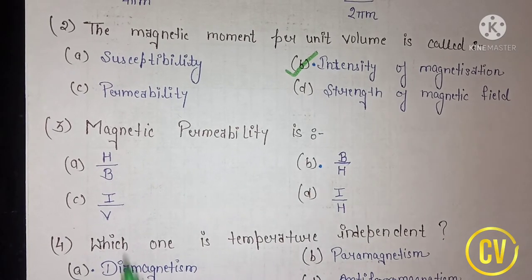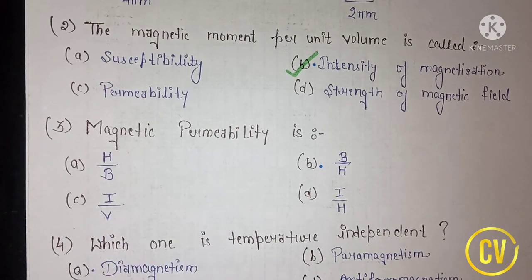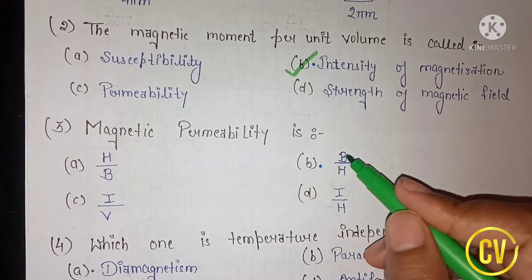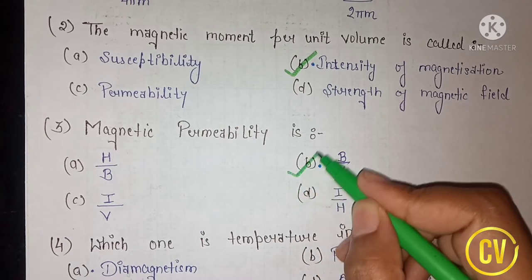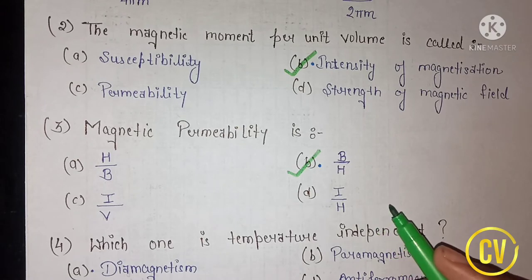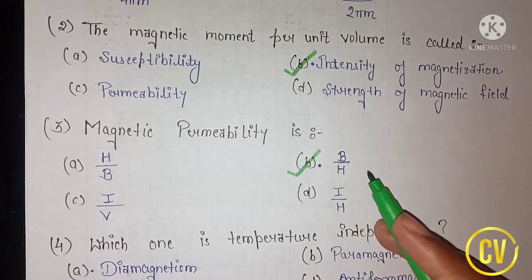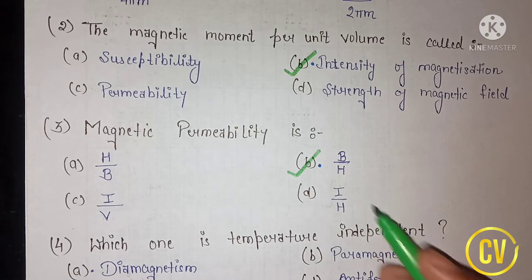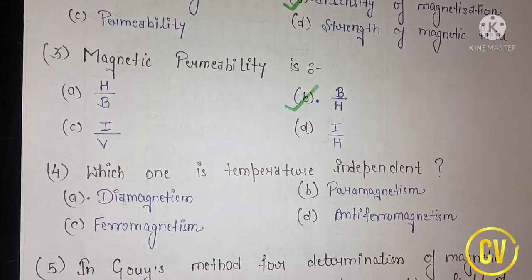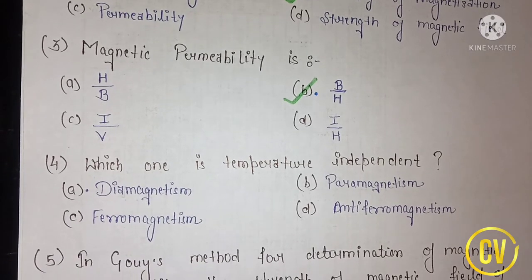The next question asks: what is magnetic permeability? Magnetic permeability is B upon H. The correct answer will be B/H, which is option B.